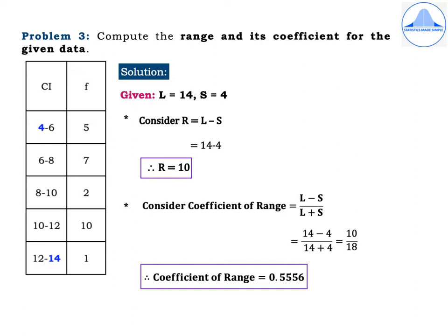Next, the coefficient of range = (L − S) / (L + S) = (14 − 4) / (14 + 4) = 10 / 18. Therefore, the coefficient of range is 0.5556.